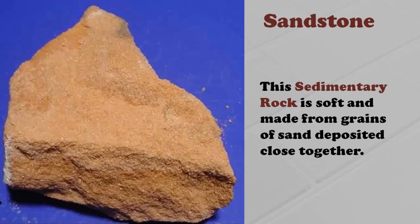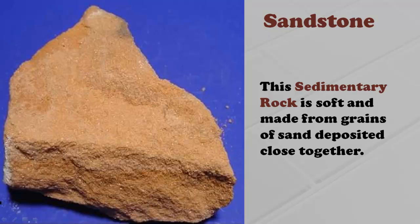Sandstone is a sedimentary rock that is soft and made from grains of sand deposited close together. The red sandstone as seen in the Red Fort and the yellow sandstone as seen in the buildings of Jaisalmer are common examples of sandstone.